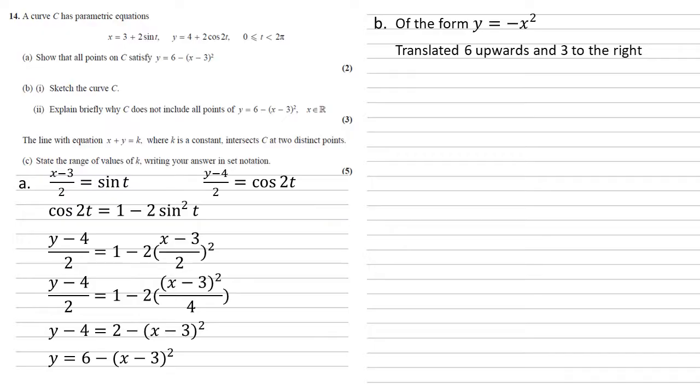But we've also got to take account of our parametric equations. Note that sine t must be between minus 1 and 1. Now as x is equal to 3 plus 2 sine t, if sine is between minus 1 and 1, 3 plus 2 sine t must be between 1 and 5. Hence our x can only be between 1 and 5. If we find the y coordinates to go with this...